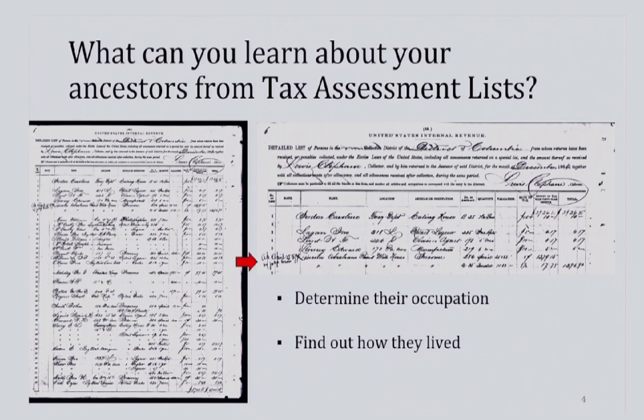During the implementation of this tax, the Bureau of Internal Revenue — which wouldn't be called the IRS until 1953 — created lists to track who owed and who paid taxes.